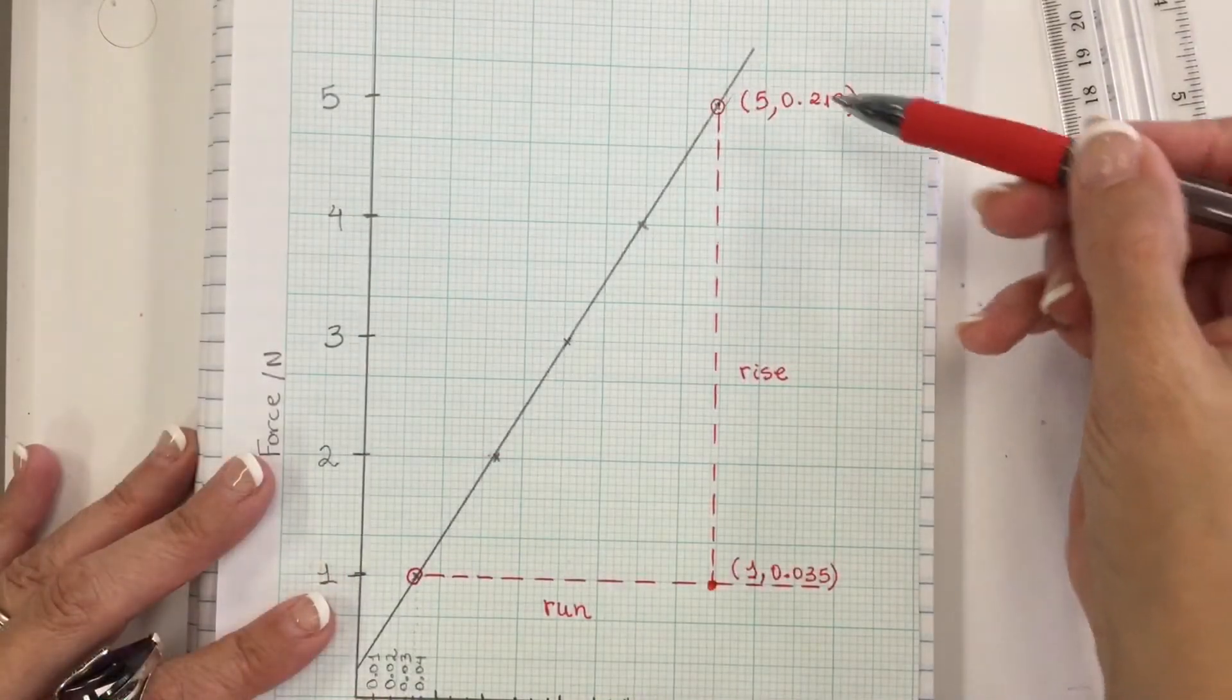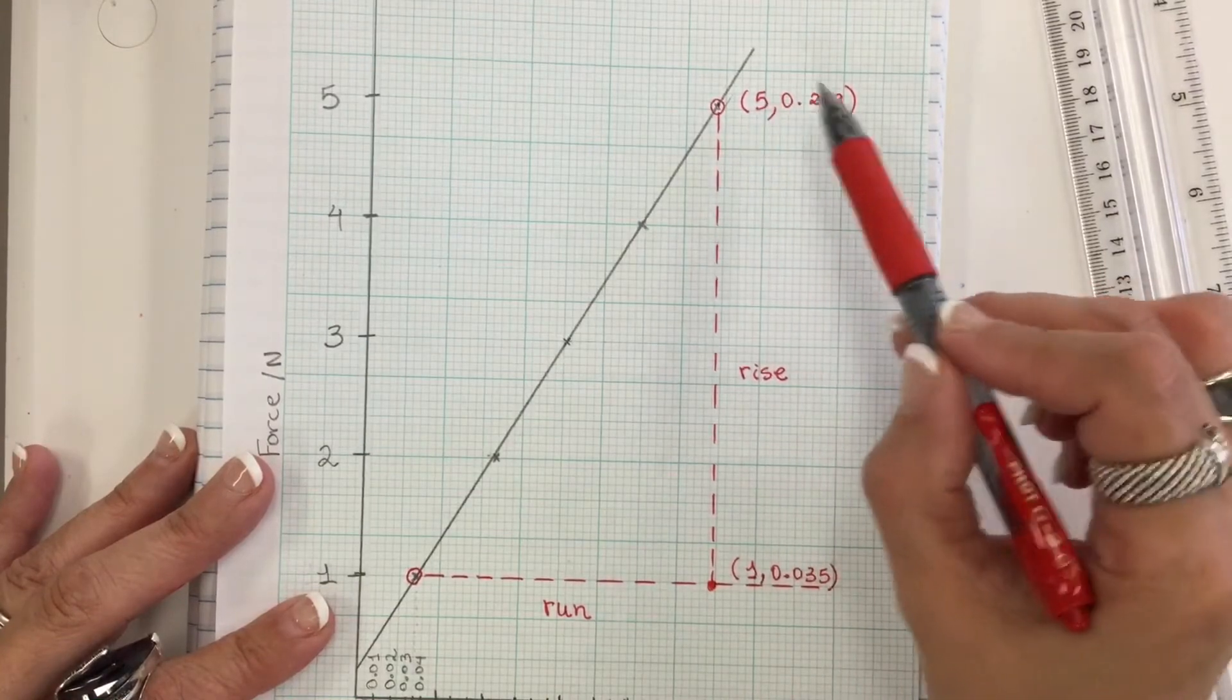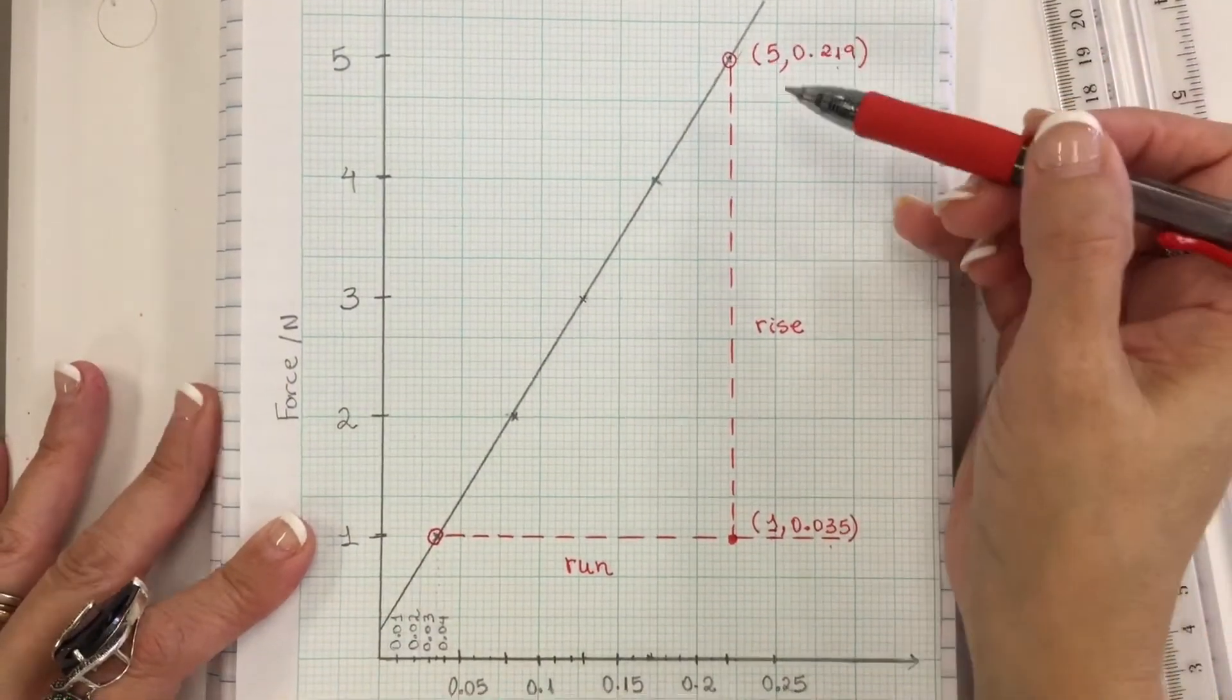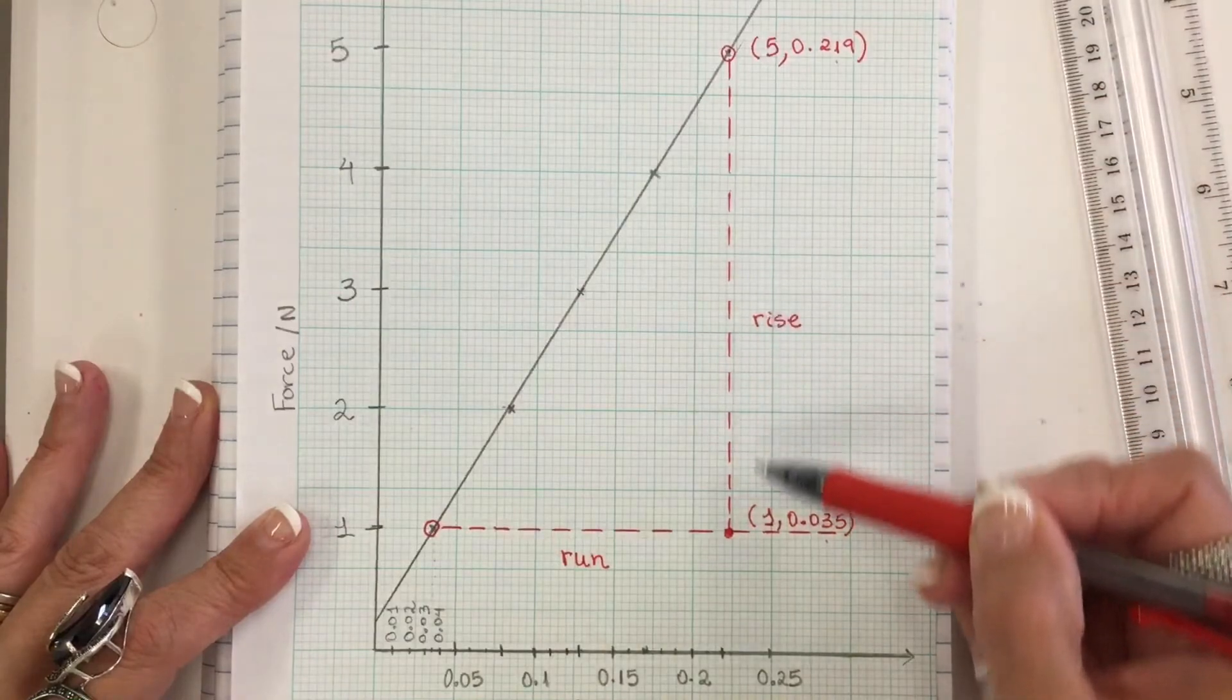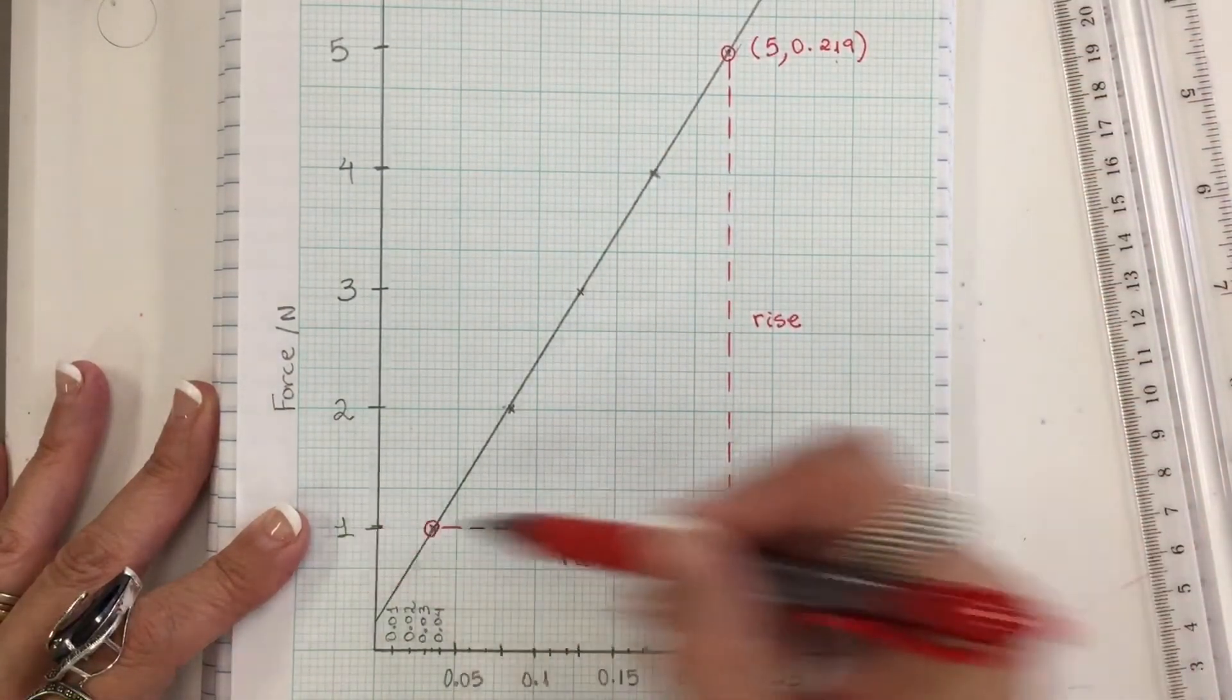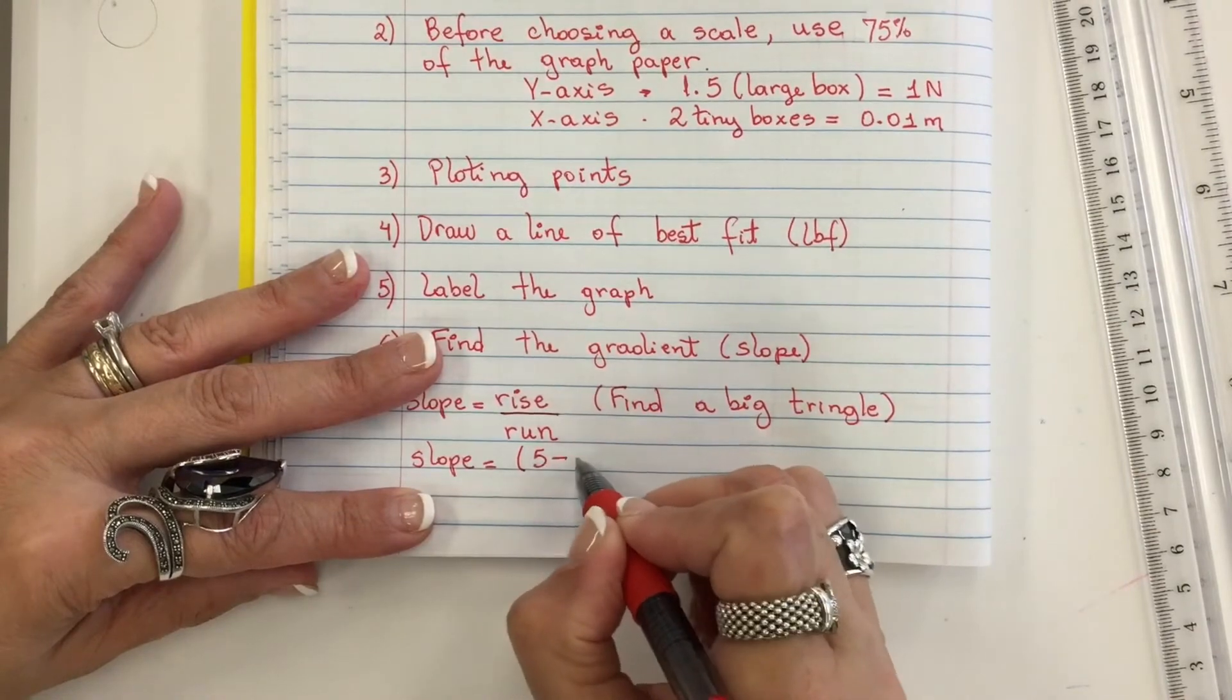Now I have those points. For y, I have this. For x, I have this. This is y and this is x. In terms of y, I'm going to subtract 5 minus 1. So that's the rise: 5 minus 1.